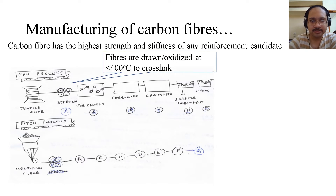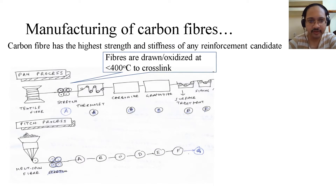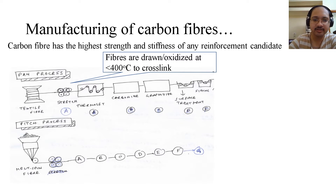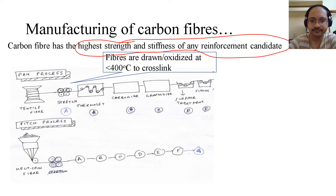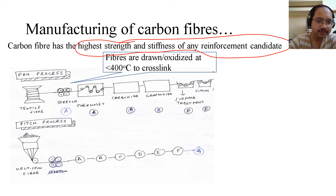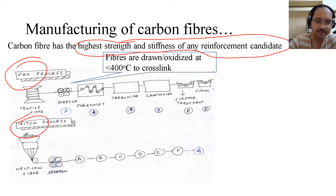Carbon fiber has the highest strength and stiffness of any reinforcement candidate. As discussed, carbon fibers may be produced from two precursors: PAN and pitch. We will now look into the manufacturing process for both.